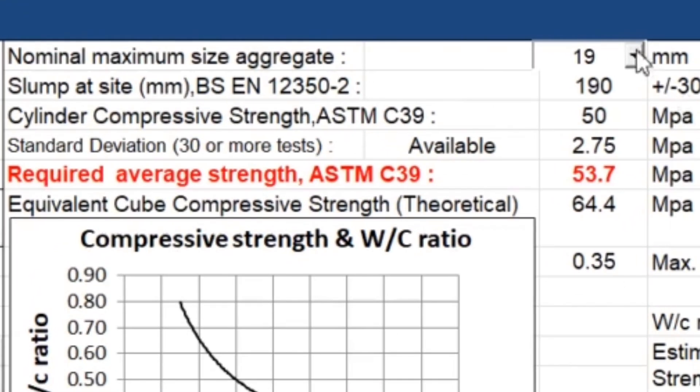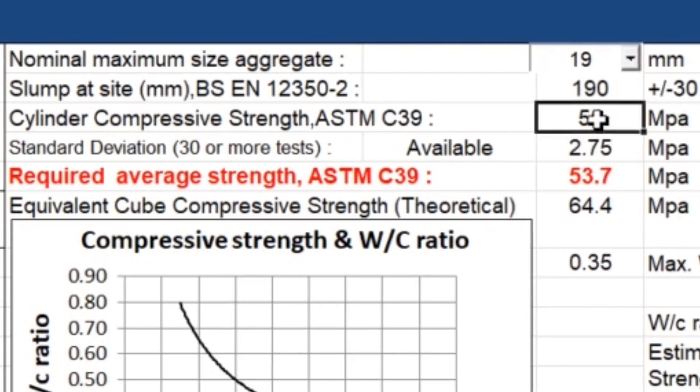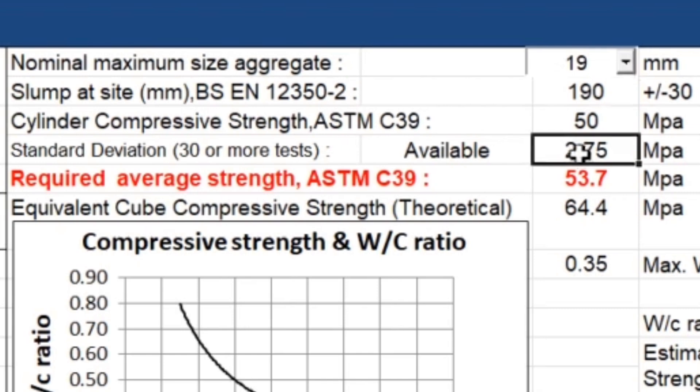using this optimizer template. Let's say I have to use 19 millimeter maximum size of aggregate. Specified strength is 50 MPa and 190 mm slump.